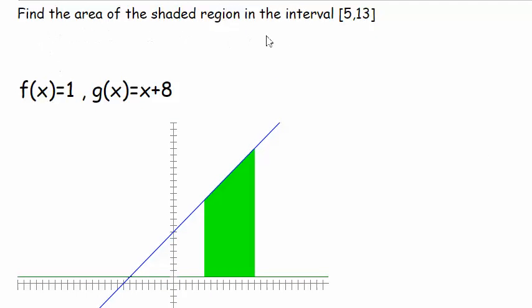Okay, so we need to find the area of the shaded region in the interval between 5 and 13. When we count our increments here: 1, 2, 3, 4, 5, so we're here at 5, then 6, 7, 8, 9, 10, 11, 12, 13.